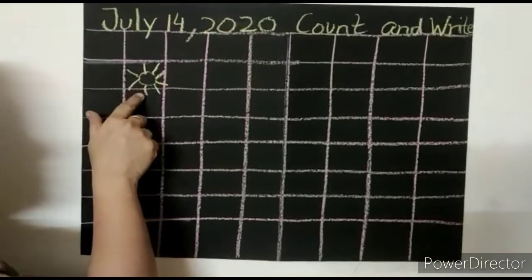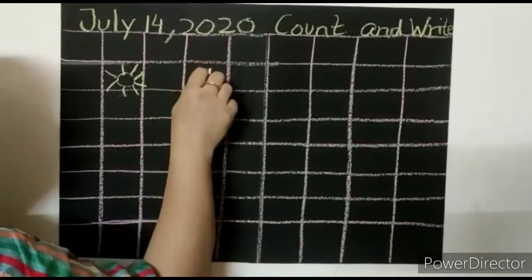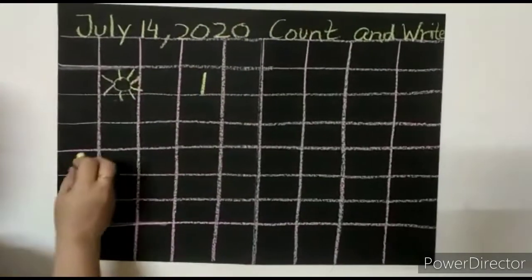Sun. How many sun are there? One. Write down your number. One. Okay.